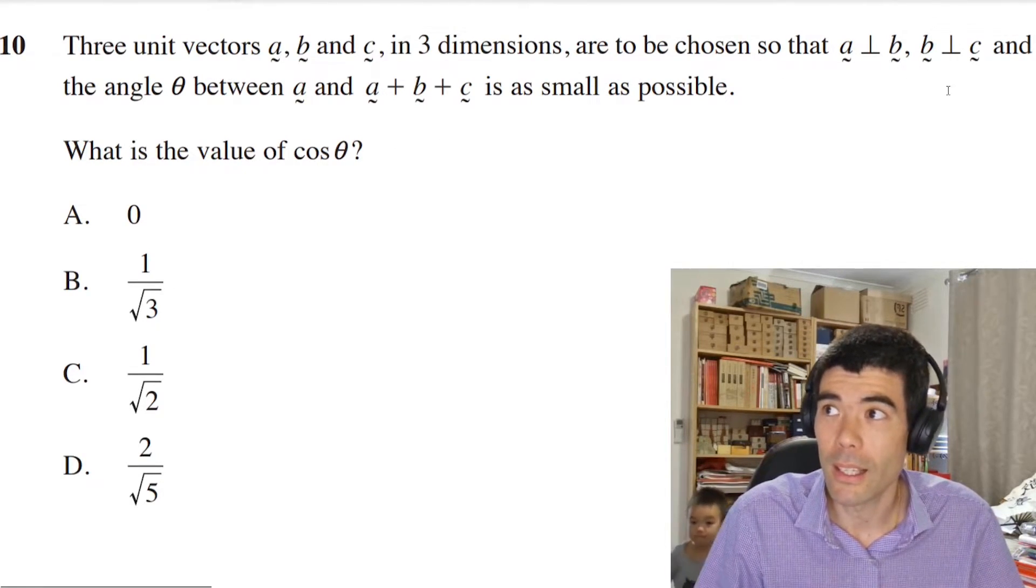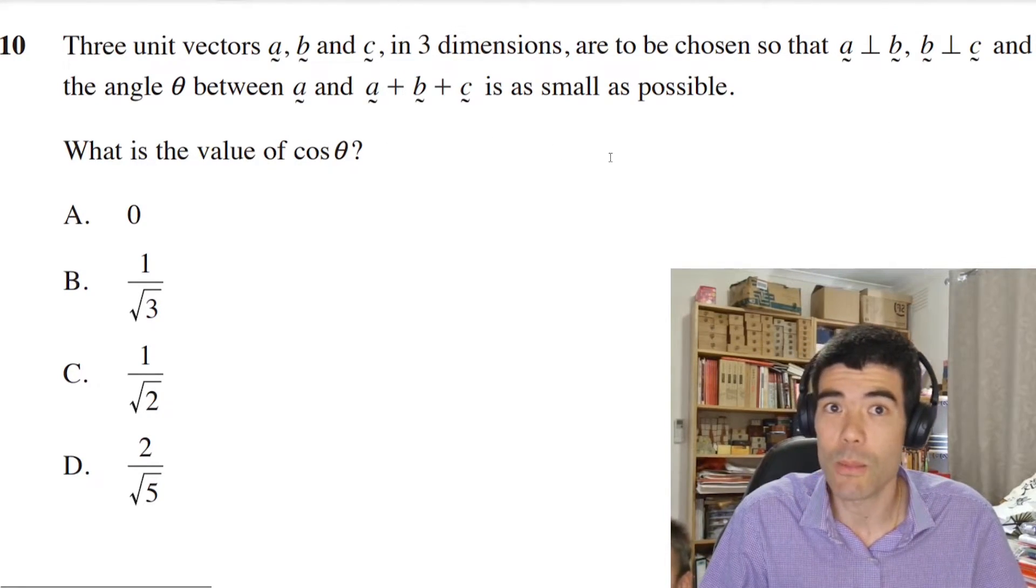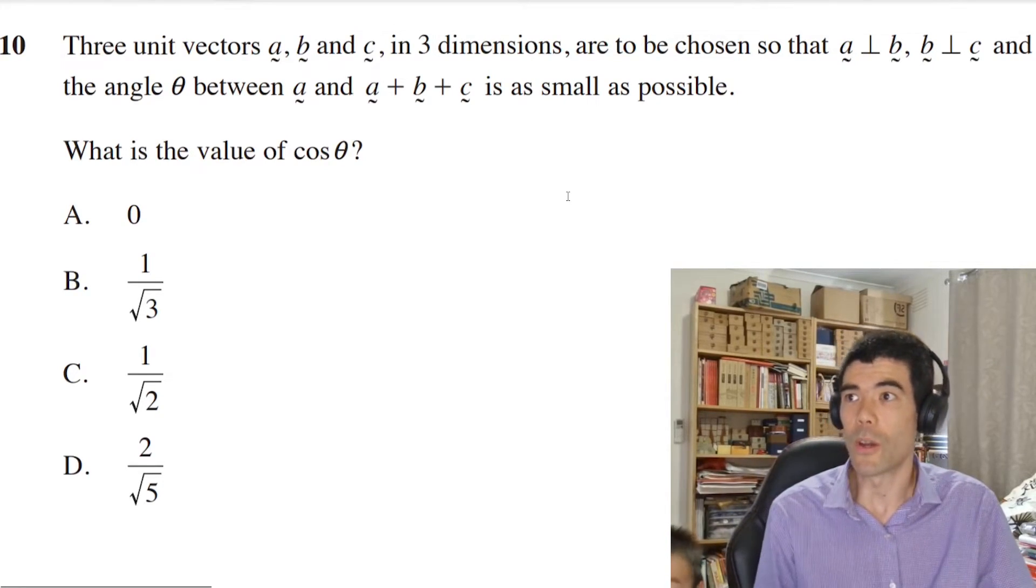b and c are perpendicular, and the angle theta between a and a plus b plus c is as small as possible. What is the value of cosine theta?